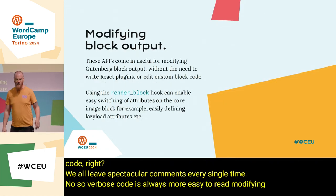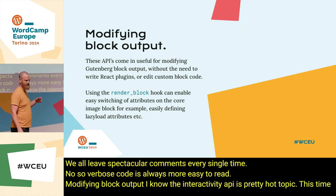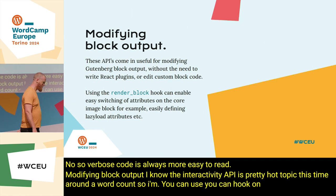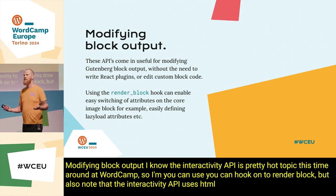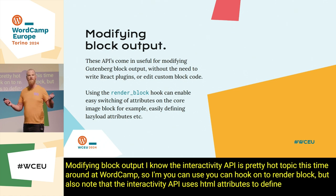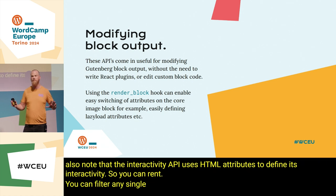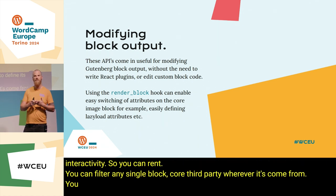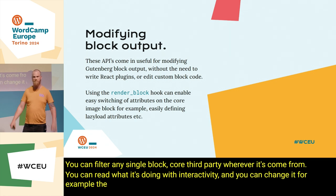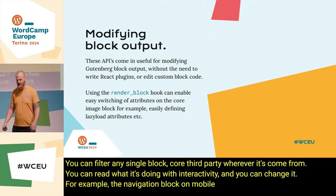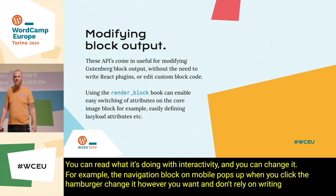Modifying block output: the interactivity API is a pretty hot topic this time around at WordCamp. You can hook on to render block, and note that the interactivity API uses HTML attributes to define its interactivity. So you can filter any single block — core, third party, wherever it's come from — you can read what it's doing with interactivity and you can change it. For example, the navigation block on mobile pops up when you click the hamburger — change it however you want, and don't rely on writing a regular expression to do that.